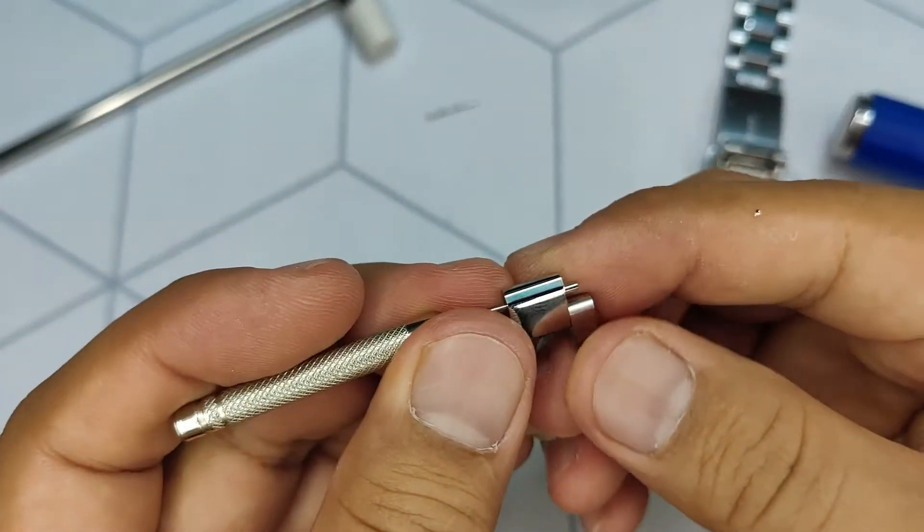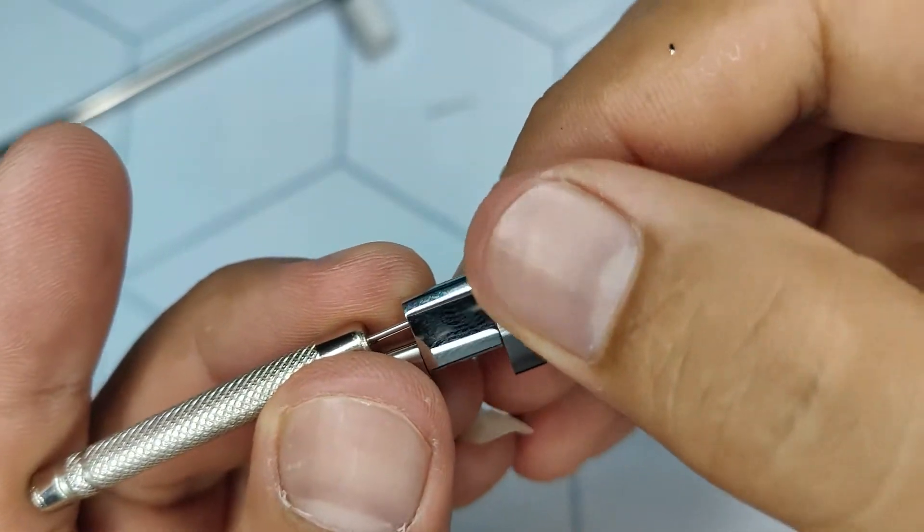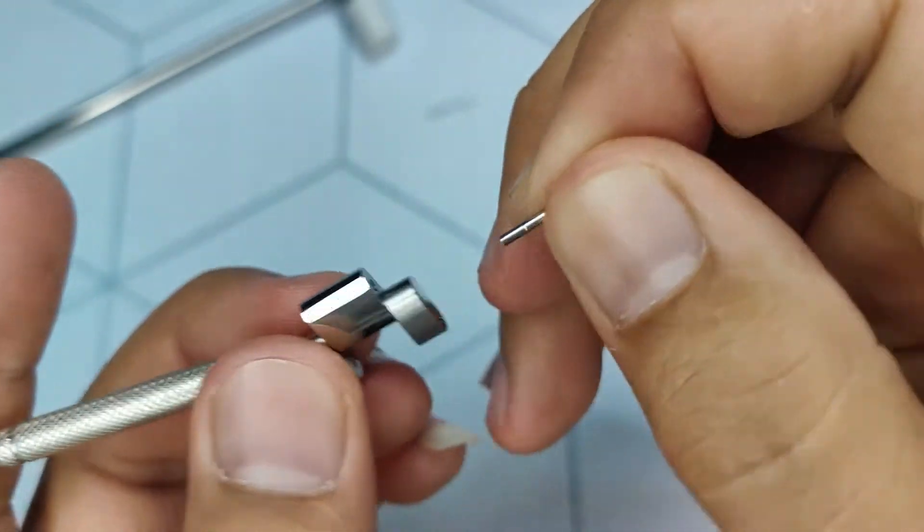Take out the barrel from the link. So that's how you remove links using a pin pusher and hammer.